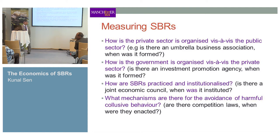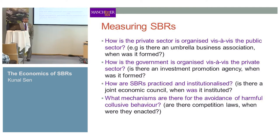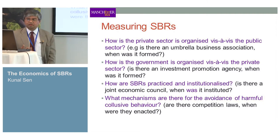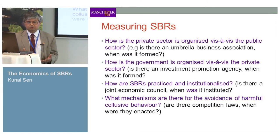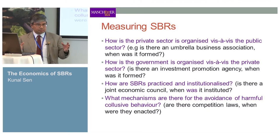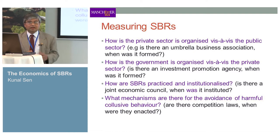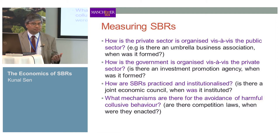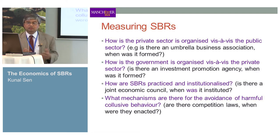The four dimensions of our measure — pioneered by Jock Williams — are: first, how is the private sector organized vis-à-vis the public sector (umbrella business associations, when formed, how active); second, how is the government organized vis-à-vis the private sector (investment promotion agencies); third, how are state-business relations practices institutionalized (joint economic councils, how often they meet); and fourth, what mechanisms exist to avoid harmful collusive behavior — are there competition laws, when enacted, and are they actually enforced?